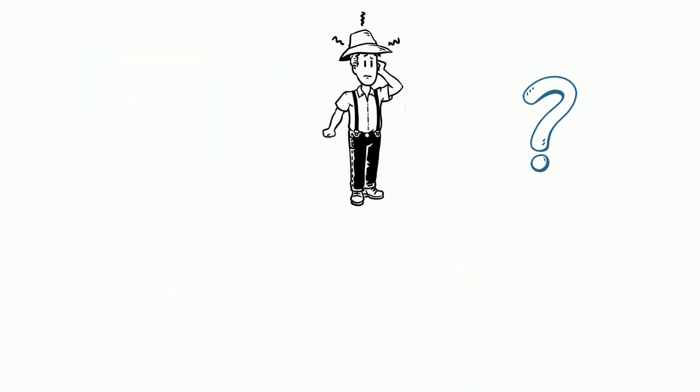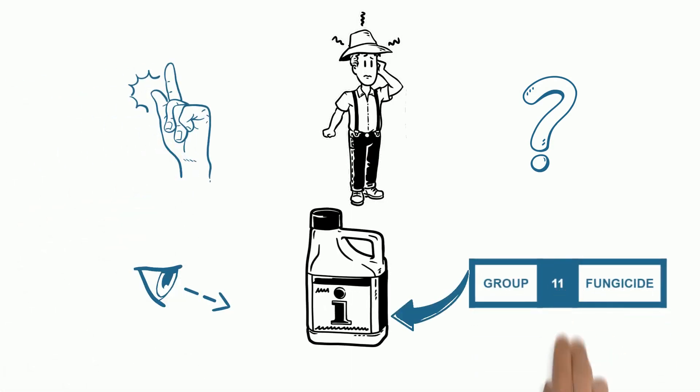But how do farmers know the mode of action of a fungicide? It's simple. Look on the product label. The code is there.